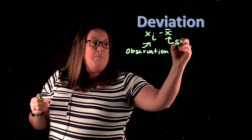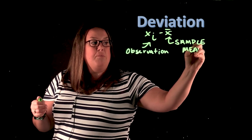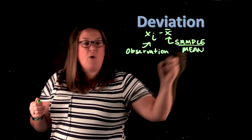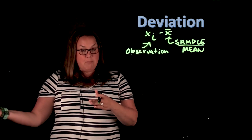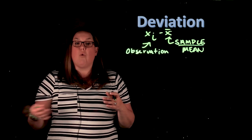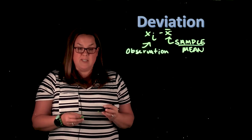And then if you remember, x bar was what we called the sample mean. So x bar is the notation we use for the sample, whereas if you remember, mu is the notation we use for the population mean. So this is going to be x bar, which is the sample mean.